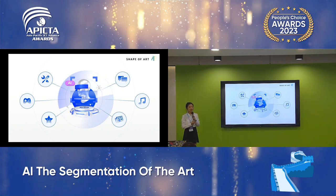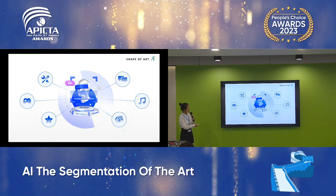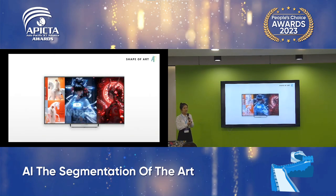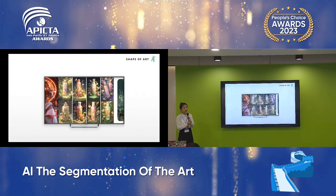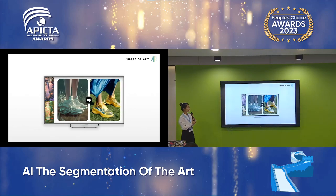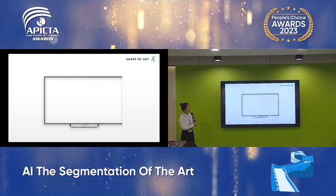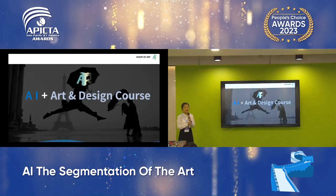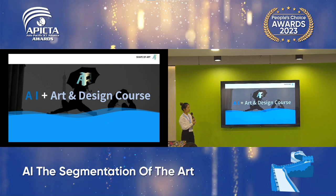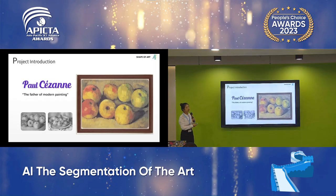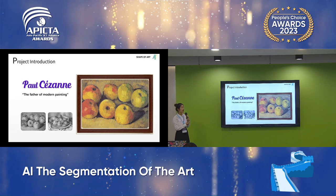Everyone says that our future will be the era of artificial intelligence. Tools like Stable Diffusion, MidJourney and other AI can already paint independently. So our team combined artificial intelligence with art design basic courses to produce an art design teaching software. Now I will take the French artist Suzanne Apple as an example to explain and analyze for you.